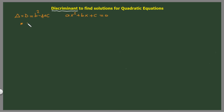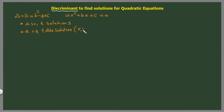It goes like this: if your discriminant delta is bigger than 0, you get two solutions. If your discriminant delta is equal to 0, you're going to have one double solution — meaning x1 equals x2, for example, equals 2. And if your discriminant is less than 0, there is no solution.